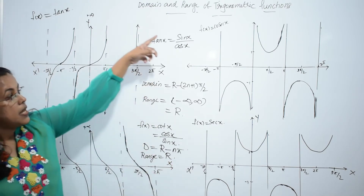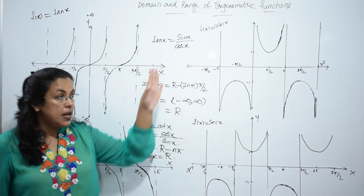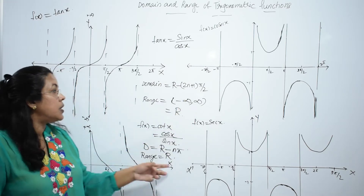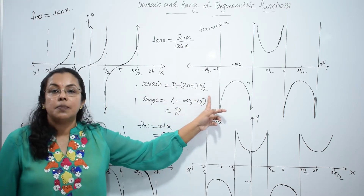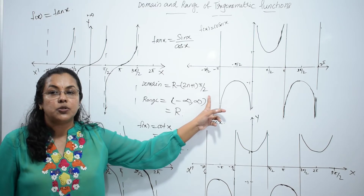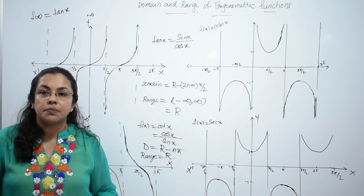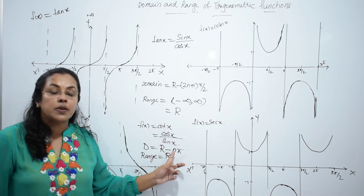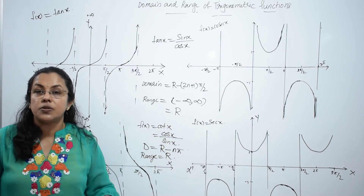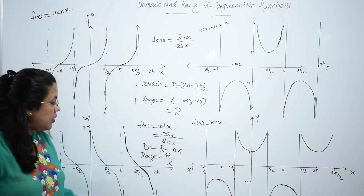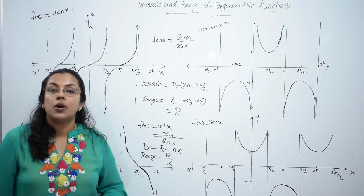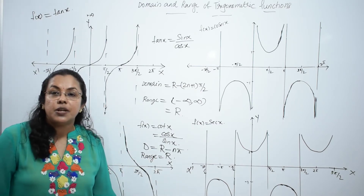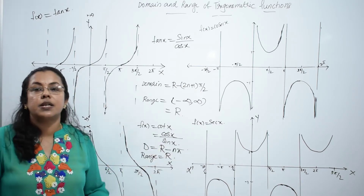To summarize: tan x is sin x over cos x. Tan is not defined when cos x equals 0, so we avoid those values. Domain of tan equals ℝ minus {(2n+1)π/2}, and range is the set of real numbers. Cot is cos x over sin x. Cot is not defined when sin x equals 0, so domain of cot equals ℝ minus {nπ}, and range is minus infinity to plus infinity — the set of real numbers.